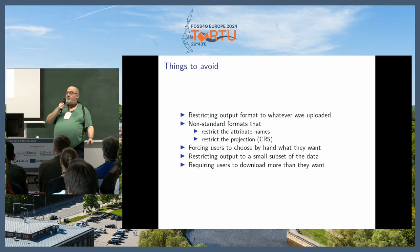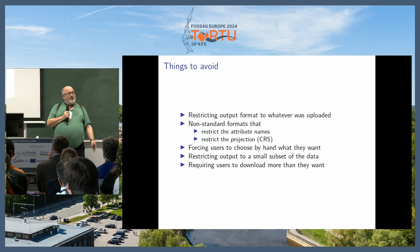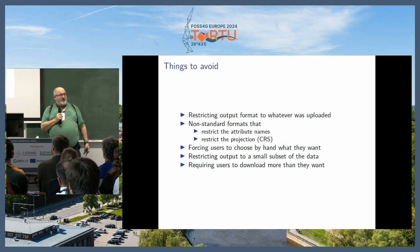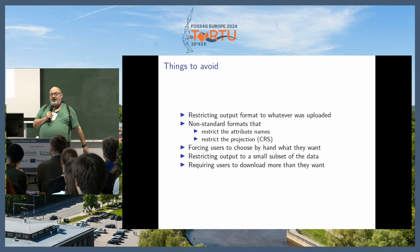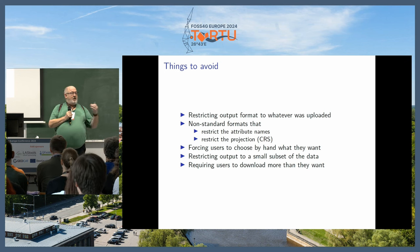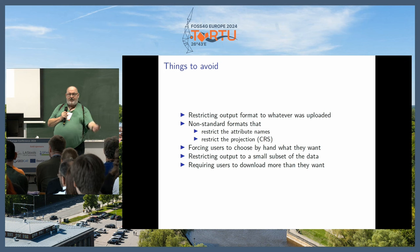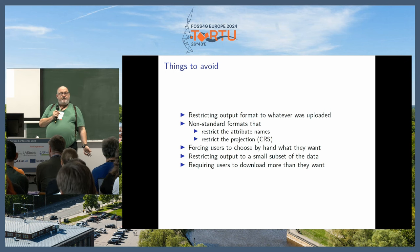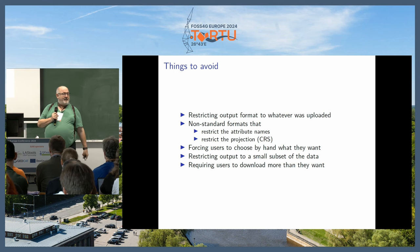Conclusions: don't restrict your output format to whatever was uploaded to your portal — use GDAL, OGR, GeoServer, MapServer, any of these programs will convert from any format to almost any format. Try not to use non-standard formats. Try not to chop up attribute names. Don't force me to choose what I want by hand — ideally I want QGIS to talk directly to your geoportal and download the data I want. I don't really want to ever have to see your geoportal; I just want to know the URL. Don't restrict me to a small subset of your data.